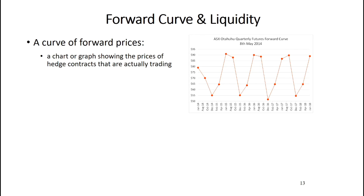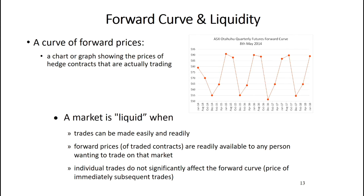You'll often hear people talking about the forward curve, or just 'the curve.' The forward curve is by definition a chart, graph, or table showing the prices of hedge contracts that are actually trading — for example, prices of futures contracts for electricity traded on the ASX back in May 2014. You'll also hear people talking about liquidity. A market is liquid when trades can be made easily and readily — for example, you can ring your futures broker and get trades done over the phone. The prices of hedge contracts must be readily available to any person wanting to trade, and the ASX puts futures prices on their website as they trade with a 15 to 20 minute delay.